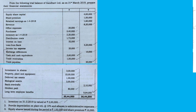Next case: from the following trial balance of Ganthar Limited as on 31st March 2019, prepare their financial statements. The details of the financial statement are given. Almost all the items are familiar to you; some items you may be hearing for the first time. We will discuss each of these items. In the additional information, inventory on 31st March 2019 is given — that is the closing stock. Provide for depreciation on plant. And finally, equity shares issued during the year: 1 lakh, and share premium is 10,000.